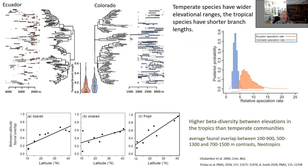The same pattern was found in other mountains - looking at how similar communities are at different elevations, which is basically a different expression of mean elevation range. If the elevation range of species is narrow, species at different elevations will be more different and have lower faunal overlap. Indeed, along a latitudinal trend, in the tropics you have very low overlap in species composition between locations of different elevation. Measuring three different elevation contrasts - between 100 and 900, 500 and 1,300, and 700 and 1,500 meters - the overlap between communities was growing as you go from the tropics northward. This was the case for lizards, snakes, and frogs, but especially for frogs, which had the steepest curve.